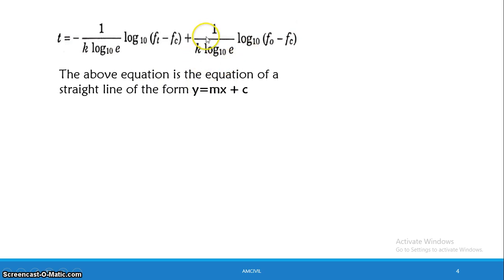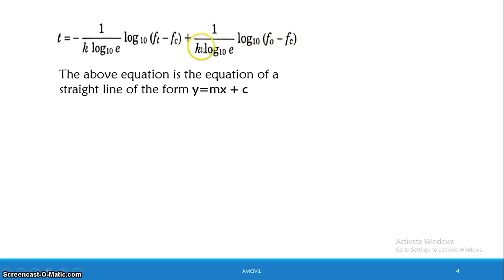The slope m equals minus 1 divided by K times log(e). There are many constants: K constant, log e constant, F0 constant, Fc constant. The intercept C is the remaining constant term. We can plot a straight line between x and y on the axes.